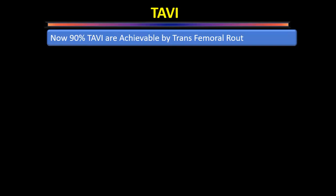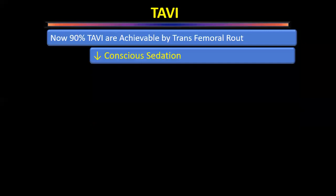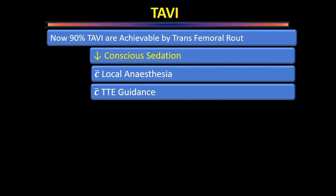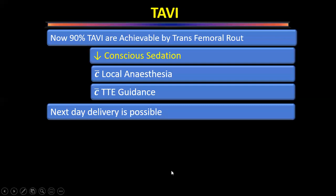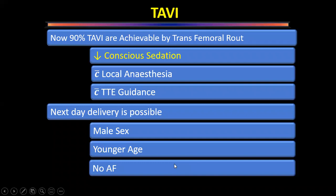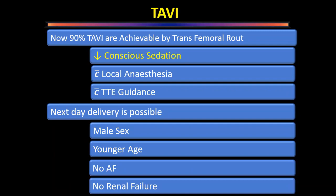Currently, 90% of TAVI procedures are performed via the transfemoral route under conscious sedation with local anesthesia and transthoracic echocardiographic guidance — general anesthesia is no longer routinely required. When performed with transthoracic rather than transesophageal echocardiographic guidance, more fluoroscopy and contrast dye (contrast medium) are required. Next-day discharge is possible in male patients, younger patients, those without atrial fibrillation, and those without renal failure.